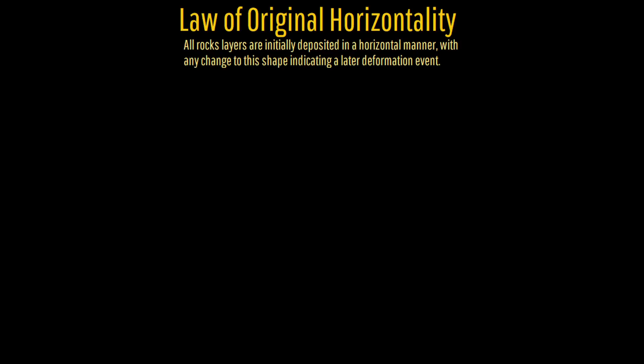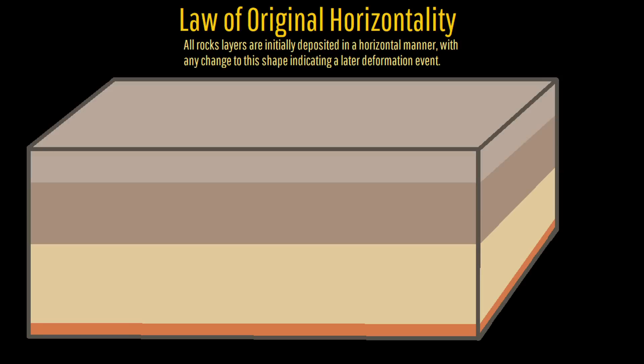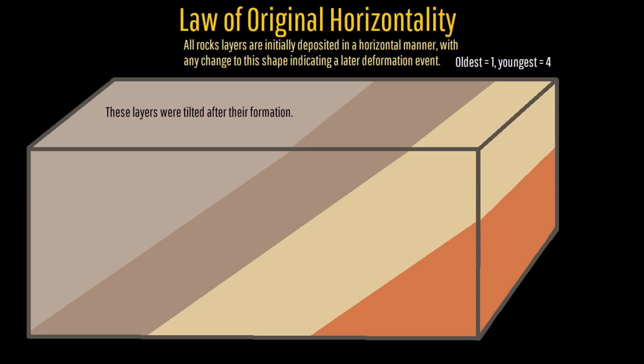Second, the law of original horizontality. All rock layers are initially deposited in a horizontal manner, with any change to the shape indicating a later deformation event.